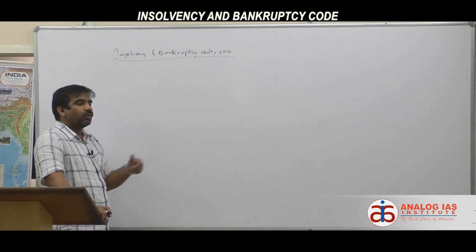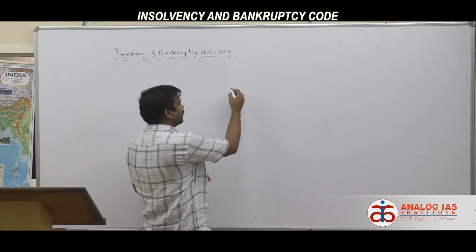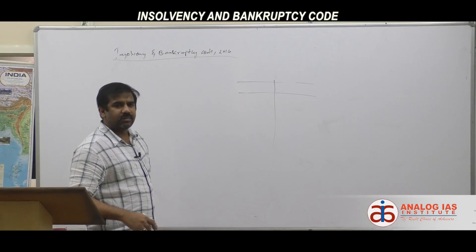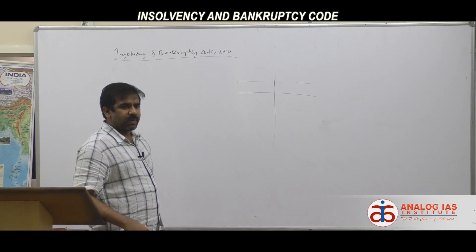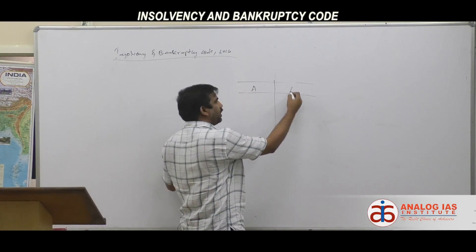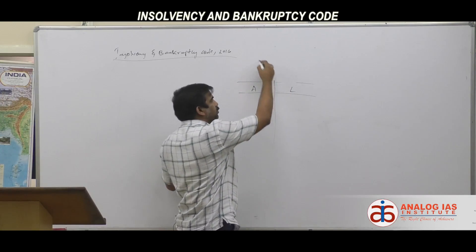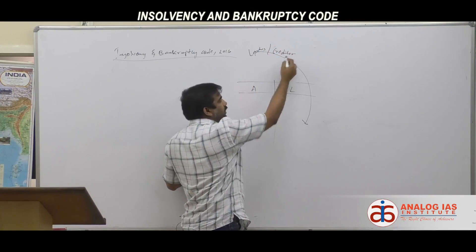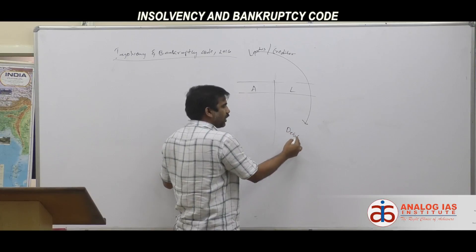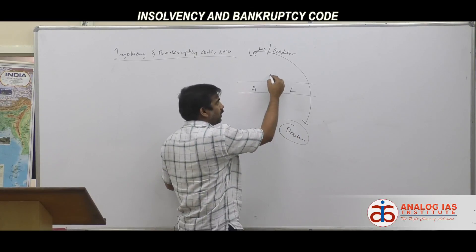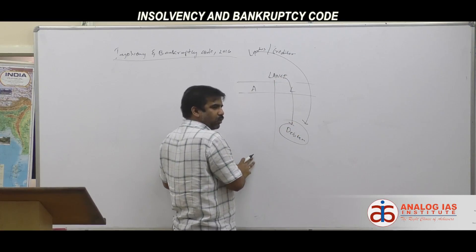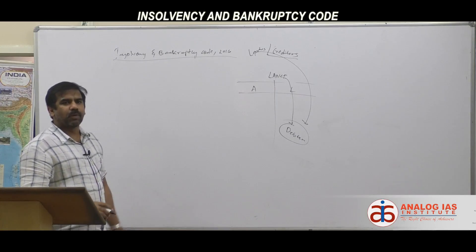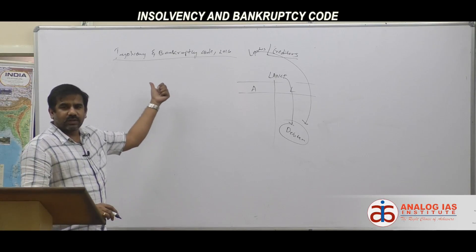To understand IBC, consider a company like Lanko Infratech. A company has assets and liabilities, and may have borrowed large amounts from lenders — these lenders are called creditors, and the company itself is the debtor. Lanko Infratech is the debtor — the one who borrowed money — while those who lent the money are the creditors.